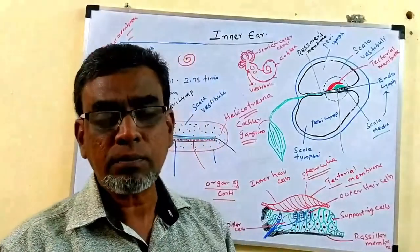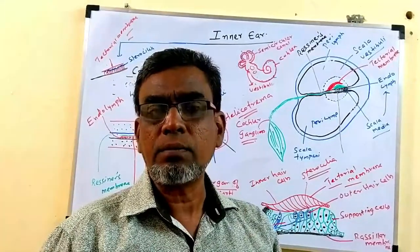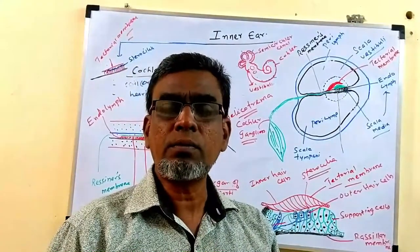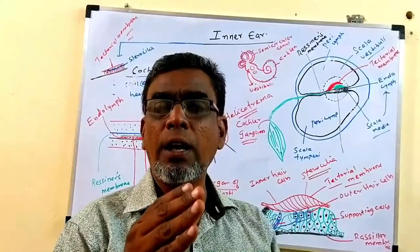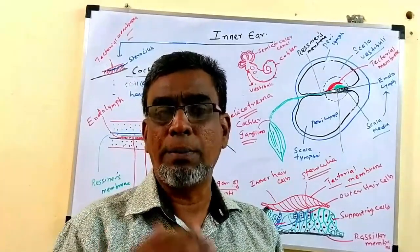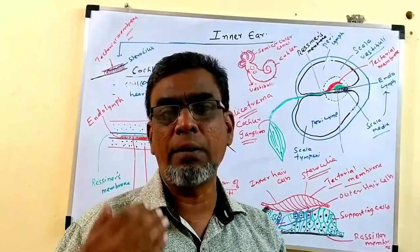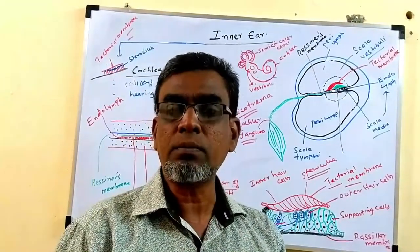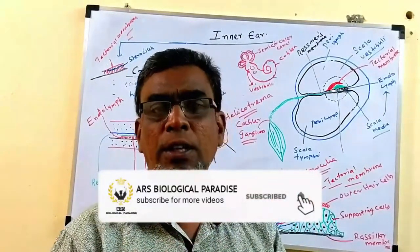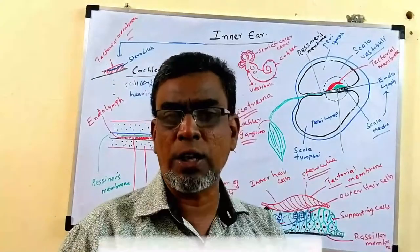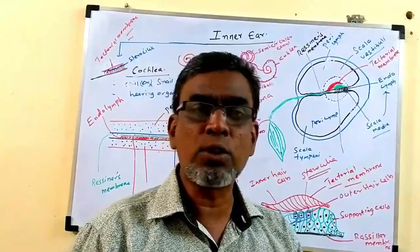In this video, we have discussed the anatomy of the inner ear — its regions and internal features, especially the Cochlea: its three chambers, Basilar Membrane, Reissner's Membrane, Scala Vestibuli, Scala Tympani, Scala Media, and the Organ of Corti as the hearing organ. In the next video, we will see the mechanism of hearing. Thank you, students.